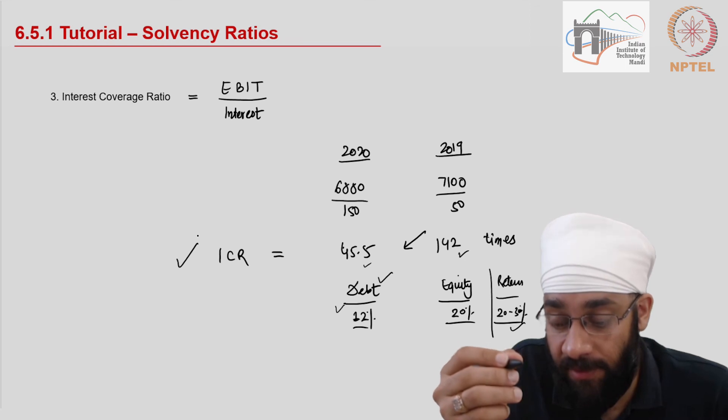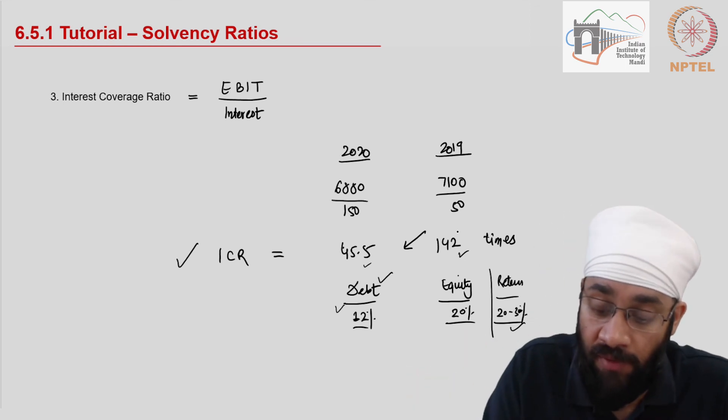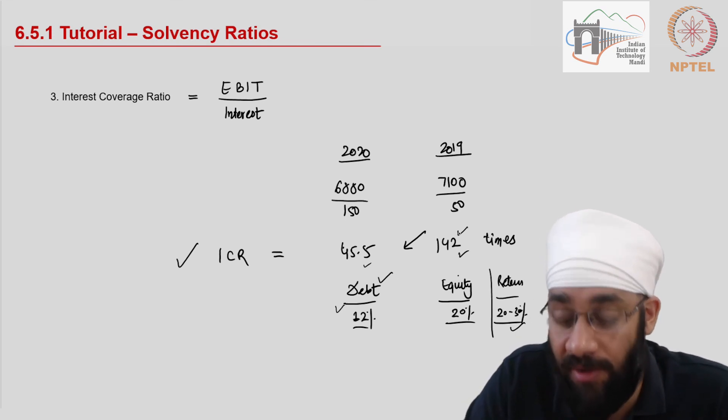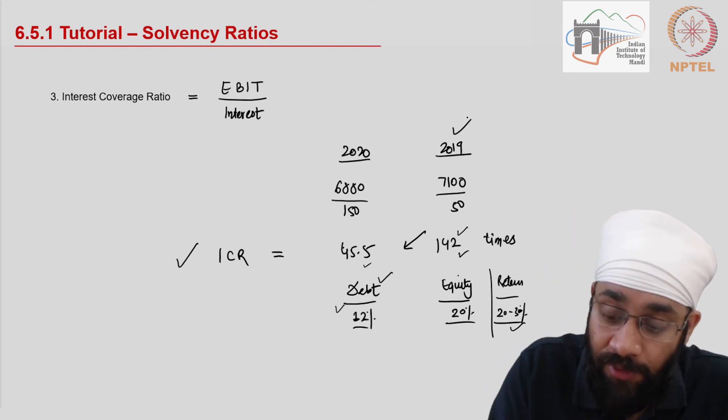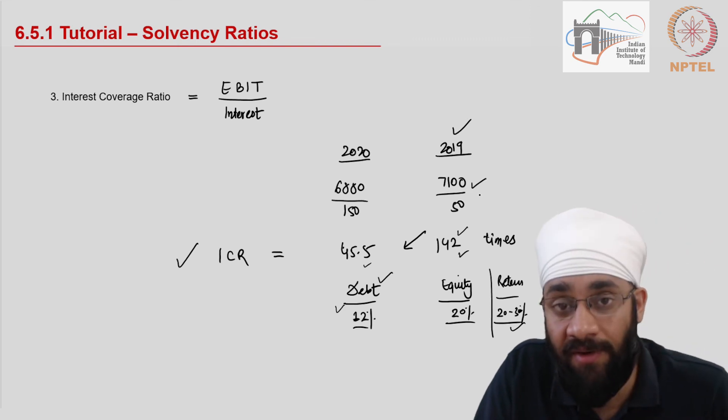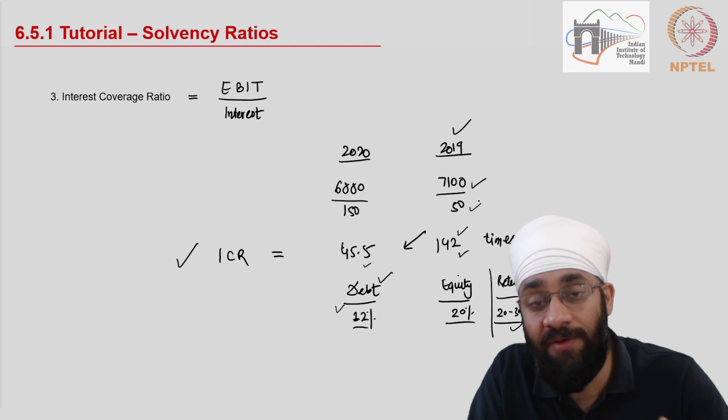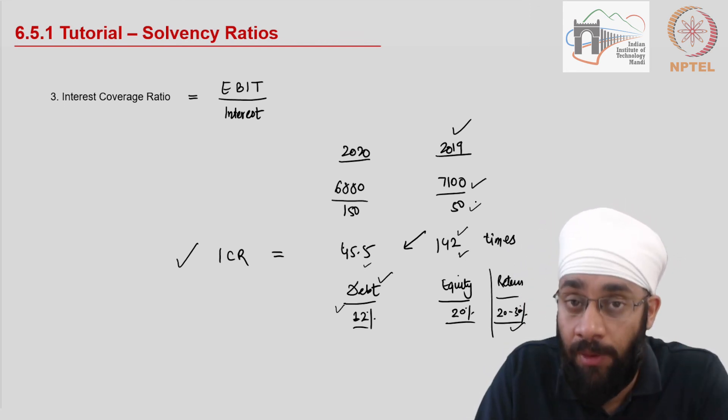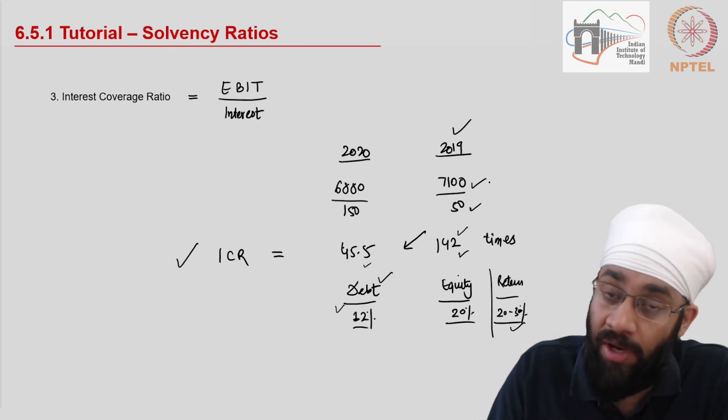So the ability of business to service its debt is reflected by the interest coverage ratio. If you have an interest coverage ratio of 142, that means that you could easily take more loan and pay more interest. So right now in 2019 you have earnings equal to 7100 and you are paying 50 as interest only. So you can very well go to the bank and take more loan and increase the interest amount by multiple times.